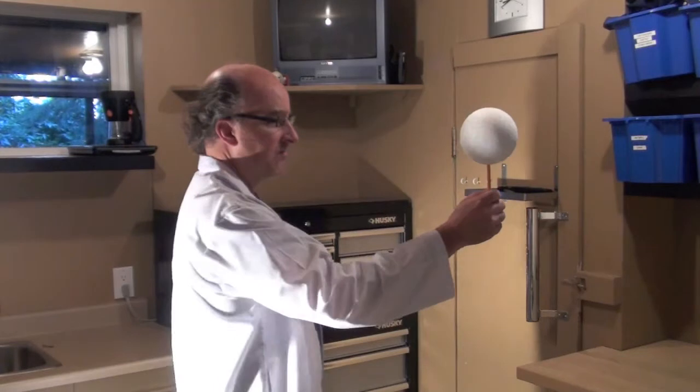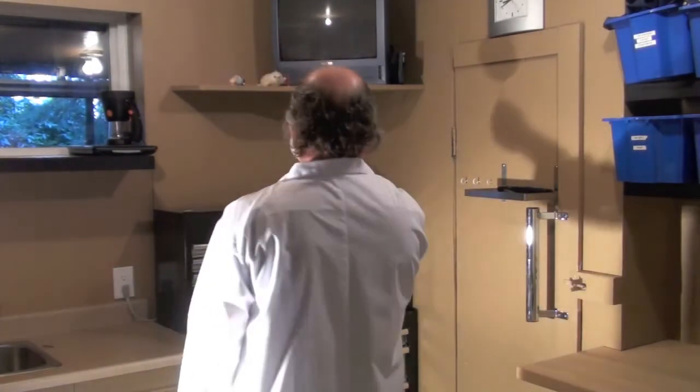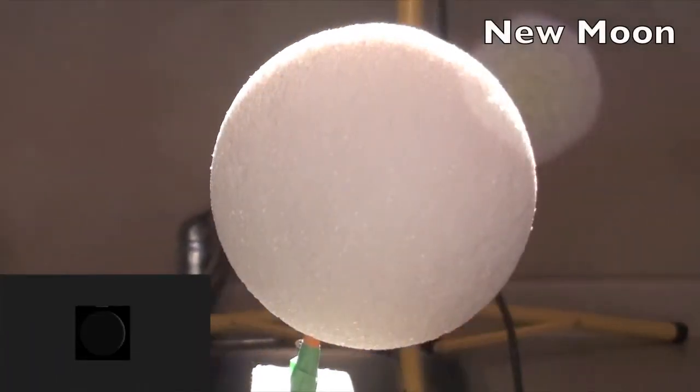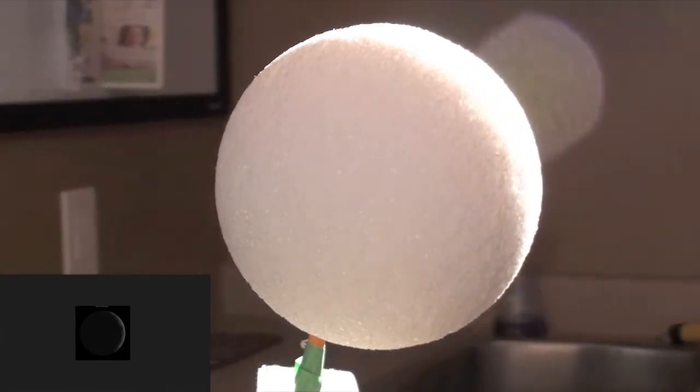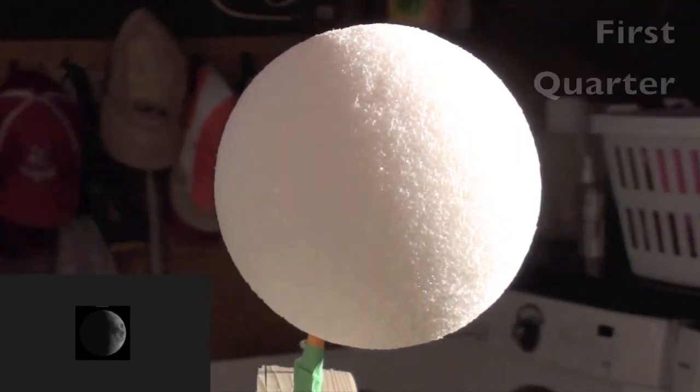Always look directly at the foam ball and try not to block the light from the lamp with your body. Looking at the foam ball as you turn you should see the light change on the surface just like the phases of the moon.